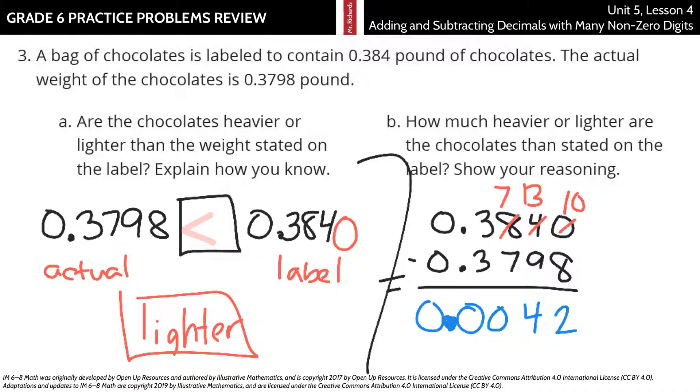So, we're at 0.0042 or forty-two ten-thousandths of a pound lighter.